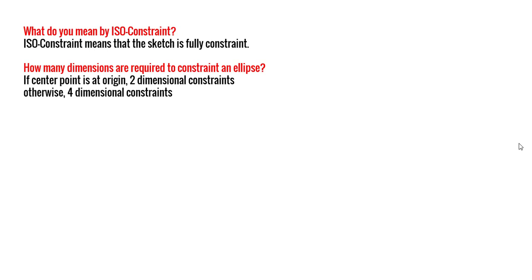The next question can be: how many dimensions are required to constrain an ellipse? For an ellipse, there are two conditions. If the center point of the ellipse is at the origin, then I will need only two dimensions — the major axis and minor axis. But if the center point is away from the origin, then I would need a minimum of four dimensions, because I need to define the position of the center point — the X-axis value and Y-axis value — as well as the major axis and minor axis.